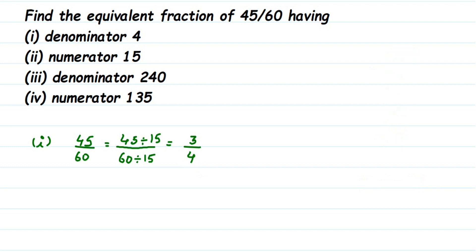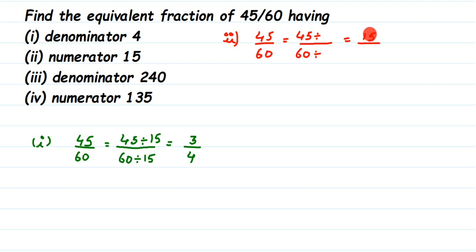Then the next question. In the second one, they want the numerator to be equal to 15. So we have 45 by 60 and they want the numerator to be 15. Again, we are dividing here because 45 is changing to 15 — if we multiply we will get a bigger number, so we are dividing 45 by some number so that the answer is 15. If you don't know that number, you can divide 45 by 15 to find it.